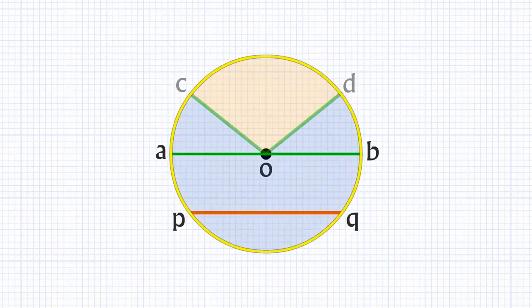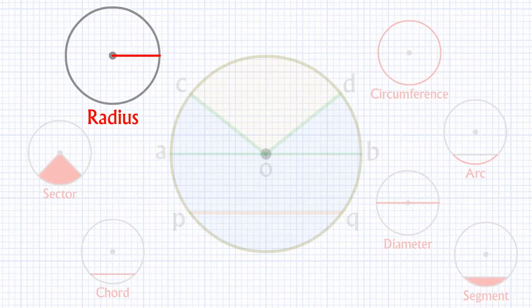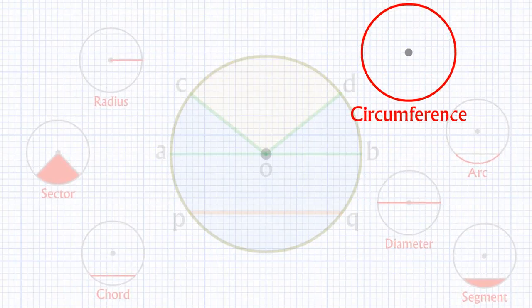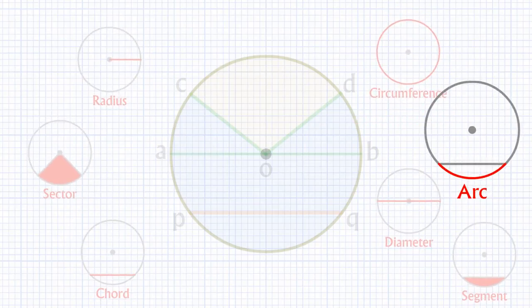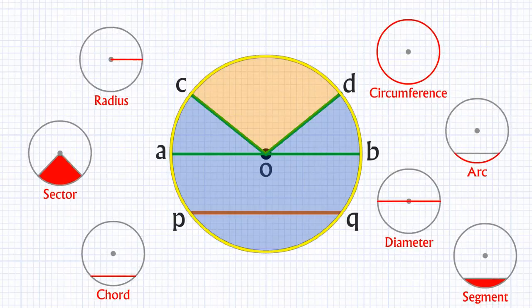So in this lesson, we learned various elements of the circle like radius, diameter, circumference, chord, arcs, segments and sectors. Thank you.